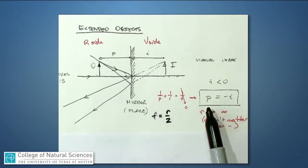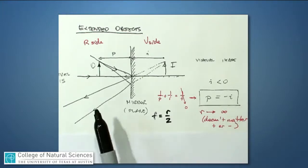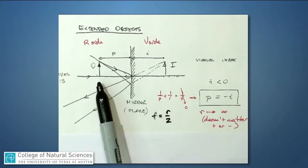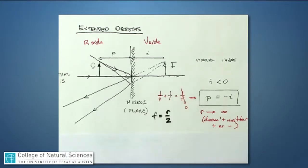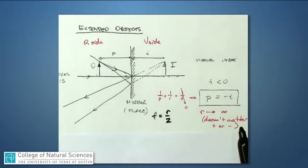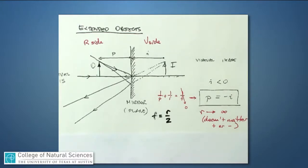Solving for I, we find that P equals negative I. The picture is drawn correctly: if the object is located 10 centimeters in front of the mirror, the image is located 10 centimeters behind the mirror. The minus sign tells us I is negative — since negative I must equal P and P is always positive, I must be negative. The image is a virtual image on the V side, exactly as far behind the mirror as the object is in front.